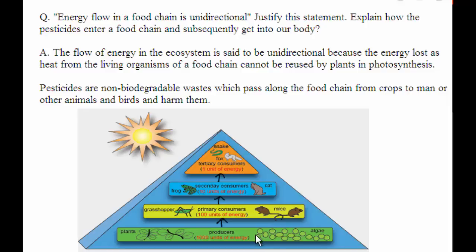Thus, the energy flow in a food chain is unidirectional, and in this way pesticides also enter a food chain and subsequently get into our body.